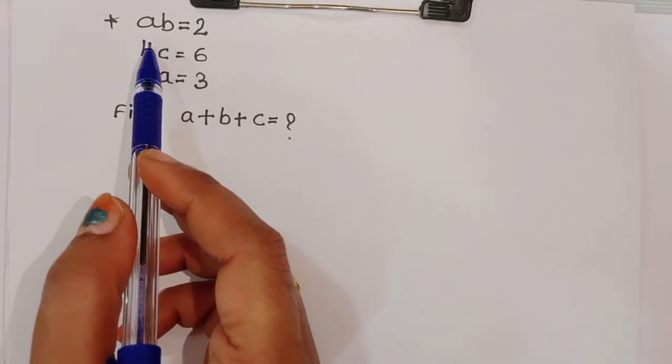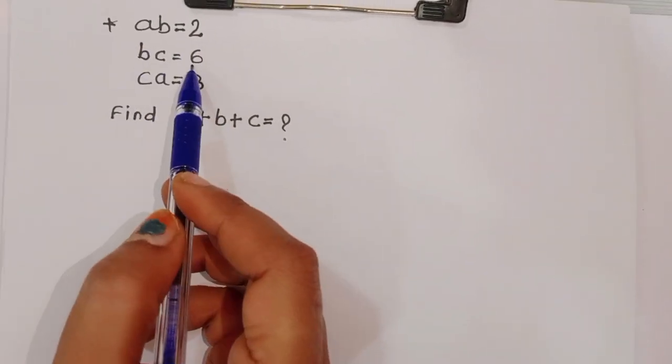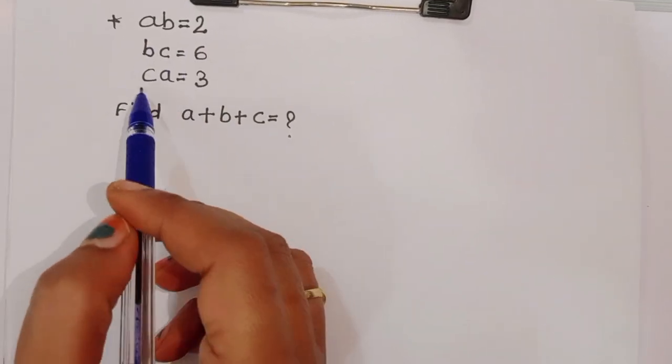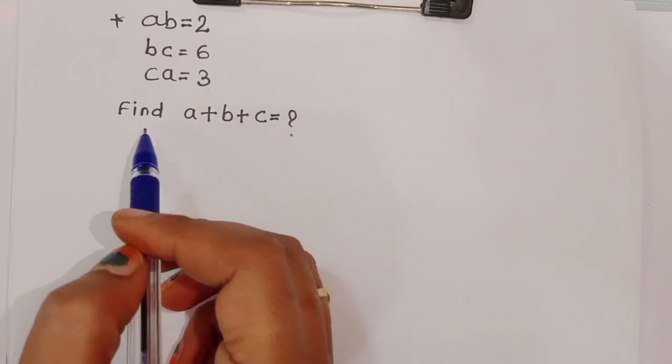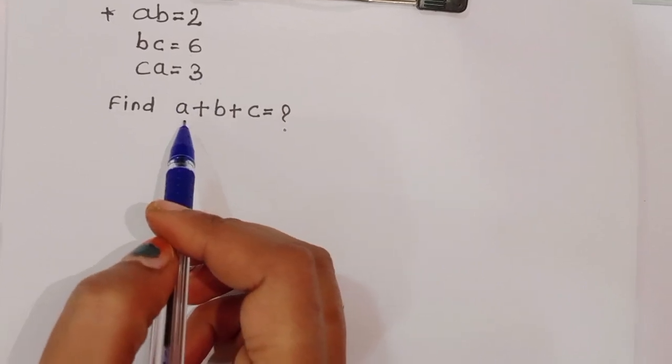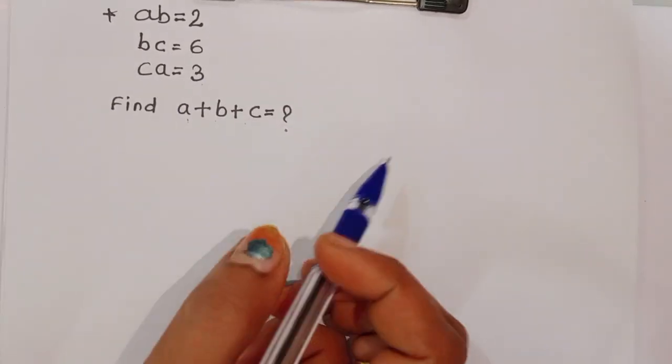The question is given: AB is equal to 2, BC is equal to 6, CA is equal to 3. We have to find out the value of A plus B plus C.